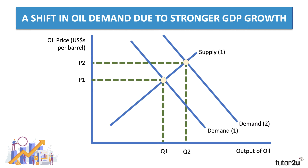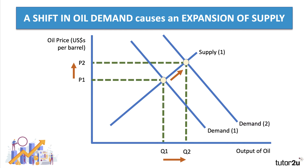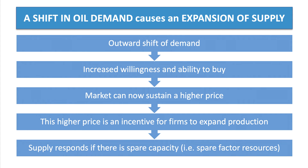As demand shifts out from D1 to D2, the equilibrium price rises from P1 to P2. And as a result, there is a greater incentive for suppliers to perhaps step on the gas a bit and increase the current production of oil to meet that higher level of demand. So an outward shift of demand causes a price change and a movement upwards along the supply curve — an expansion of supply. The market can now sustain a higher price, and this higher price is an incentive for crude oil suppliers to expand their production. Supply will respond if there is spare capacity. The level of spare capacity determines the elasticity of supply — do you have the spare factor resources to expand production?